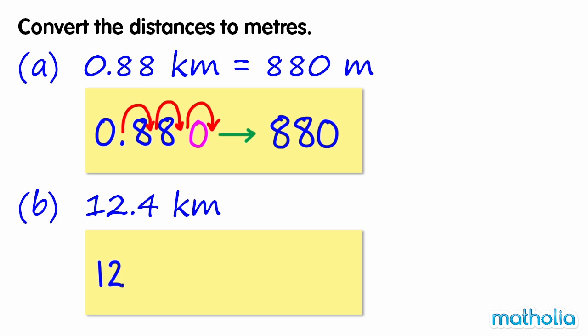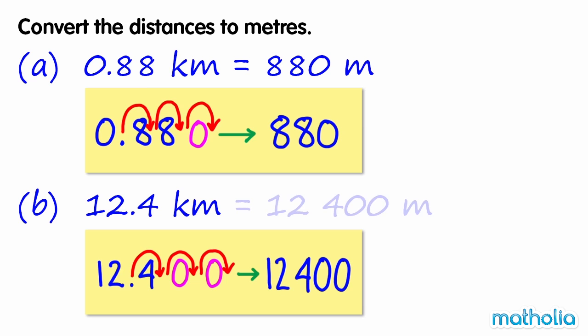B. 12.4 kilometres. Shifting three decimal places to the right gives twelve thousand four hundred. So 12.4 kilometres equals twelve thousand four hundred metres.